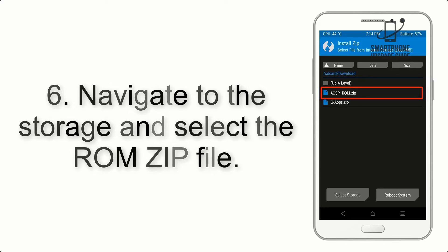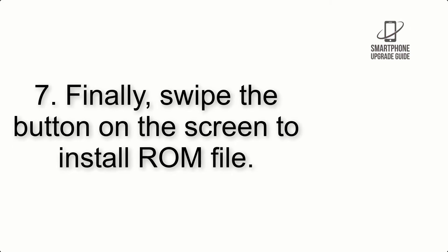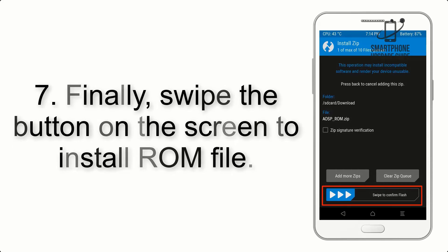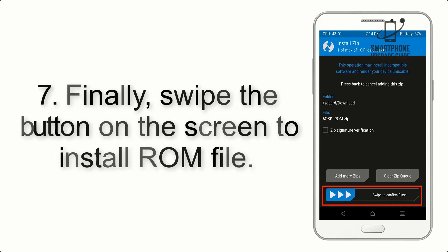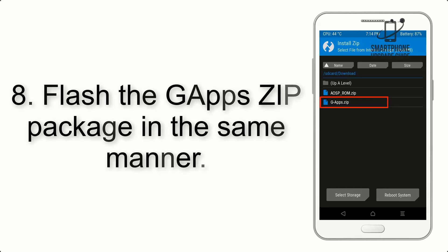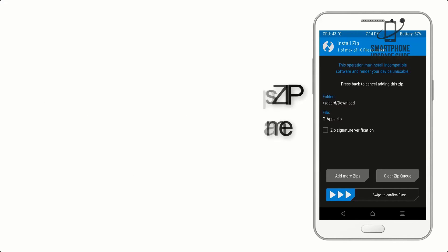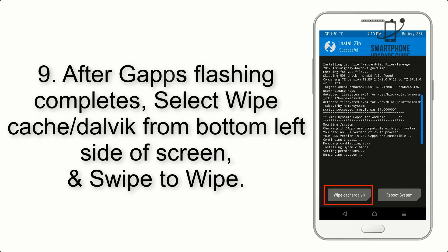Step 6: Navigate to the storage and select the ROM zip file. Step 7: Finally, swipe the button on the screen to install the ROM file. Step 8: Flash the GApps zip package in the same manner.